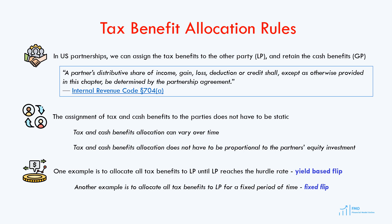There are a set of IRS tax rules which govern the allocation of cash and tax benefits to the parties — such as the rule that tax losses allocated to a party cannot exceed their capital investment into the project. We will not cover these rules in this course, as a separate course is needed to cover all of the IRS tax rules related to renewable projects. We will soon release a financial modeling course dedicated to tax equity, where extensive coverage will be provided on the IRS tax rules relevant for renewable projects.